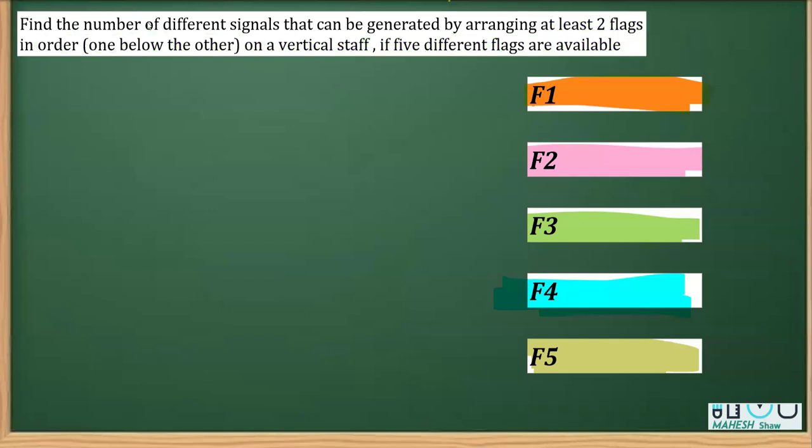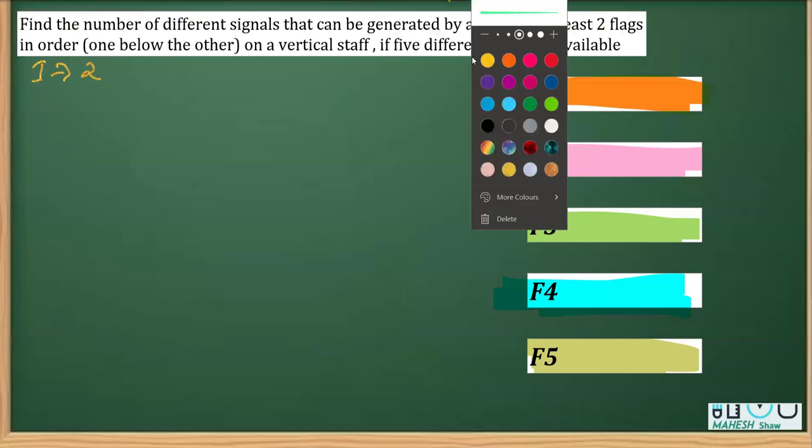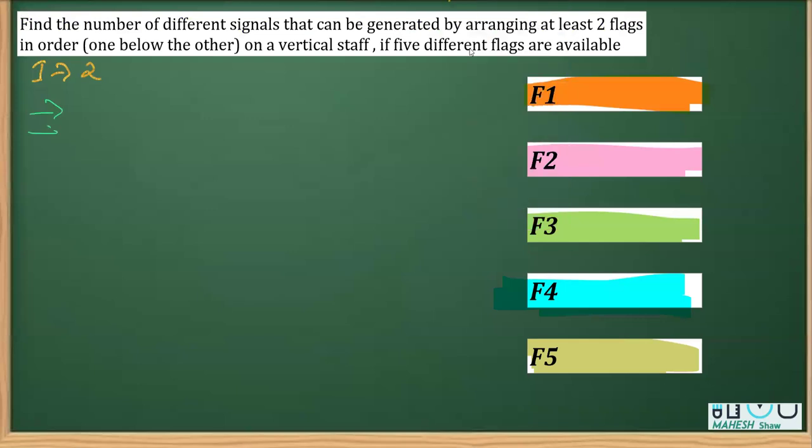So what we can observe is if we have minimum two, right, so case one, let's say for example if we take exactly two flags, then it is one below the other. So if I do for one below, let's say these are the slots, the first and the second slot. So we have five choices for the first, and since we have to generate different signals and we have to use distinct flags, therefore the first case is taking two flags at a time, we can generate 5×4, that is 20 signals.